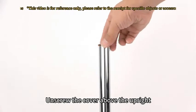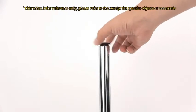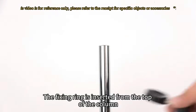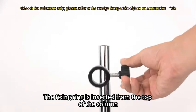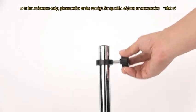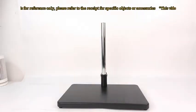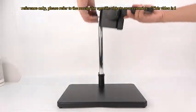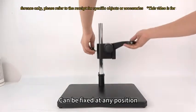Unscrew the cover above the upright. The fixing ring is inserted from the top of the column. Installing the microscope stand. Can be fixed at any position.